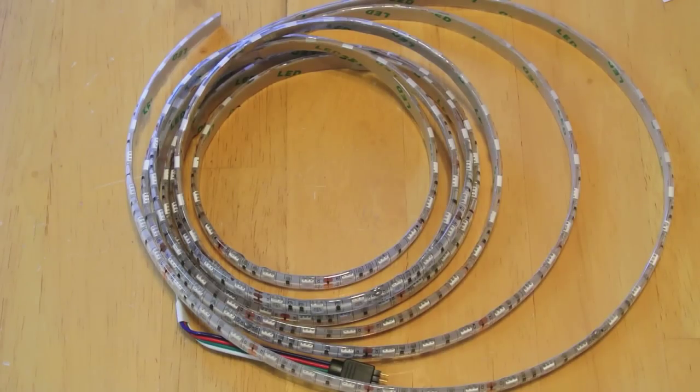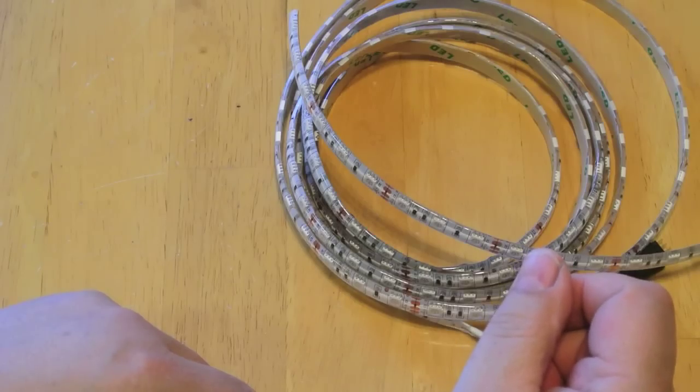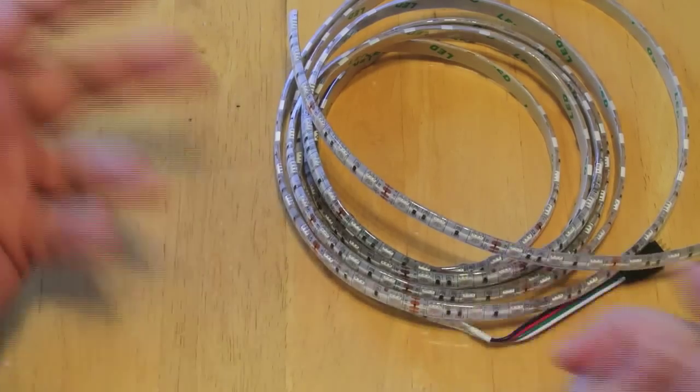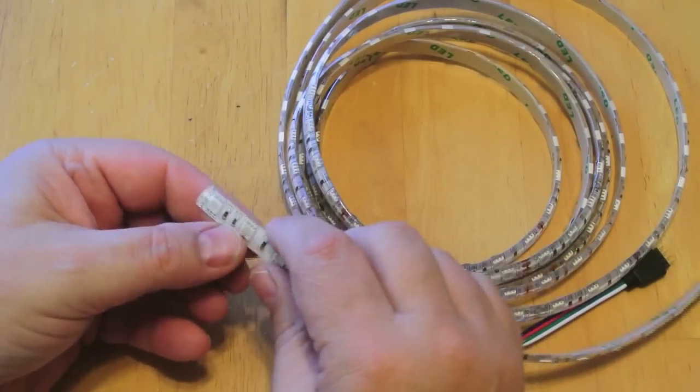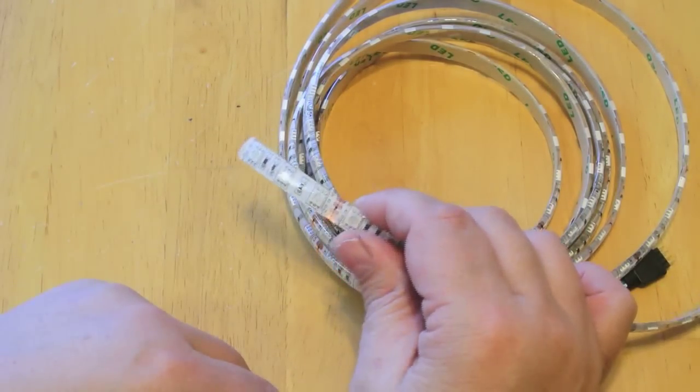When you're working on one of these LED strips, sooner or later you're going to end up with a half a strip left over and you may want to add some lighting to another area. So what you have to do is cut into this and splice it.